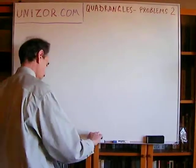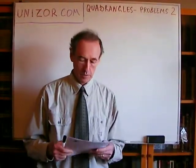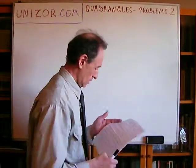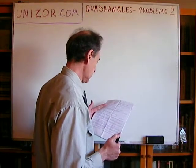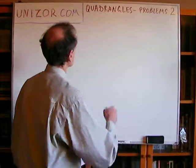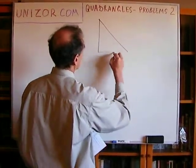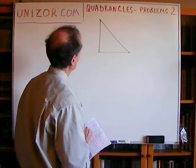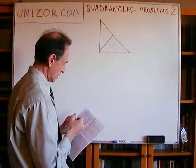Okay. Prove that a median to the hypotenuse in a right triangle is equal to half of that hypotenuse. So you have a right triangle, and you have to prove that the median to the hypotenuse is equal to its half.